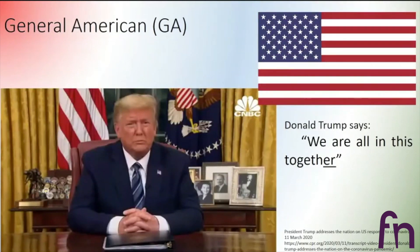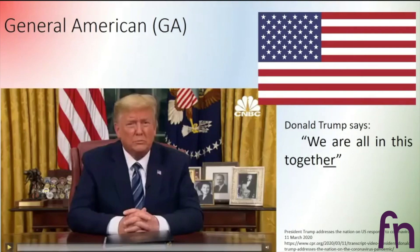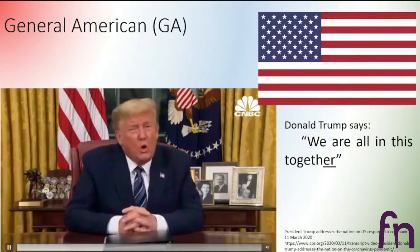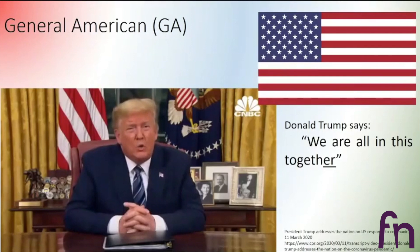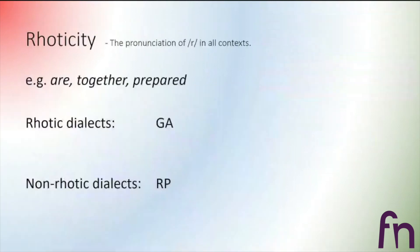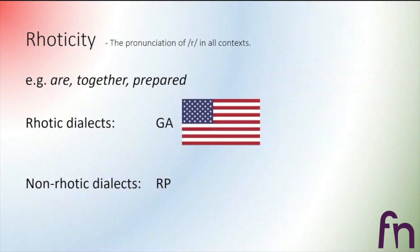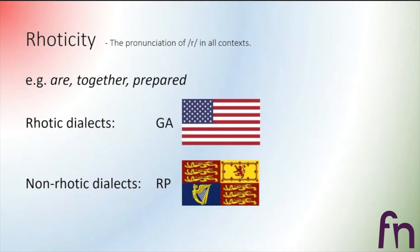Let's contrast the RP pronunciation with the pronunciation of Donald Trump. He says: 'We are all in this together.' Let's pay attention to the word 'together'. He says a soft R, but there is an R — 'together'. So General American is a rhotic dialect and RP is a non-rhotic dialect. In General American we have 'R', 'together', 'prepared', and in RP we have 'together', 'prepared' — without the R.